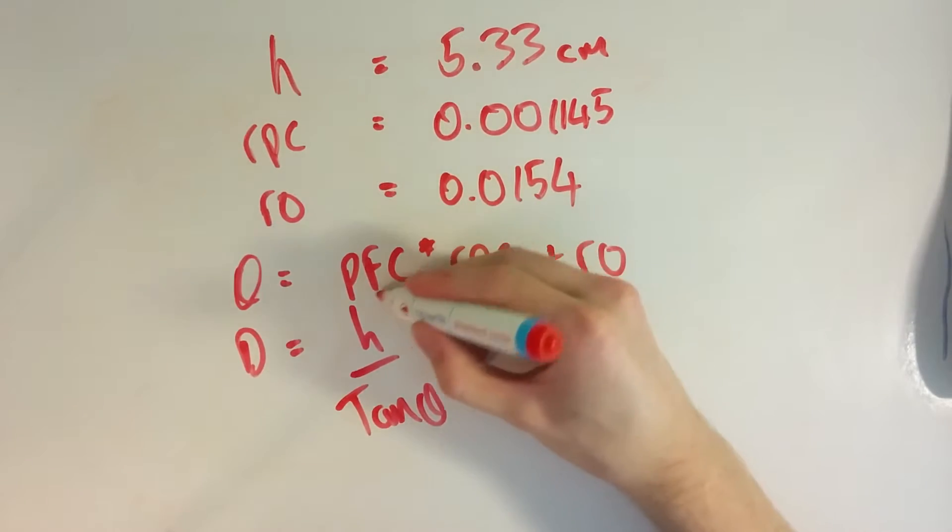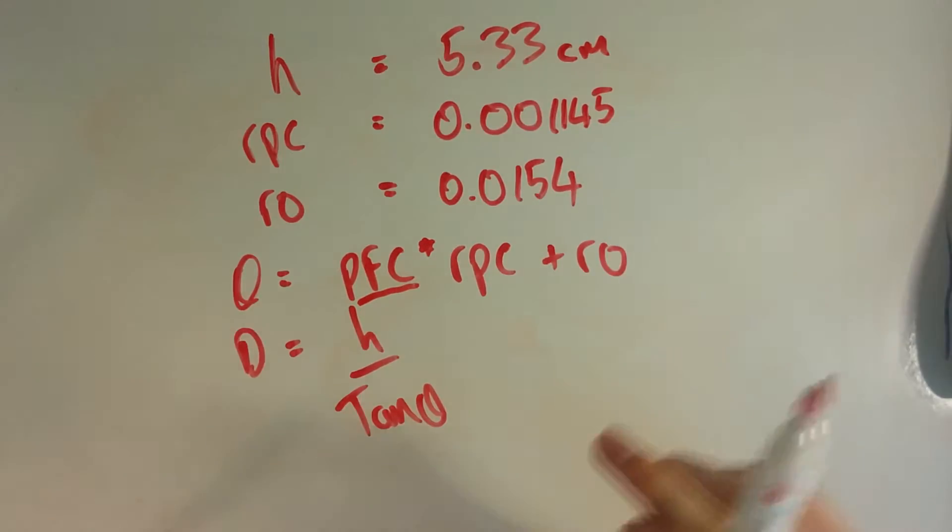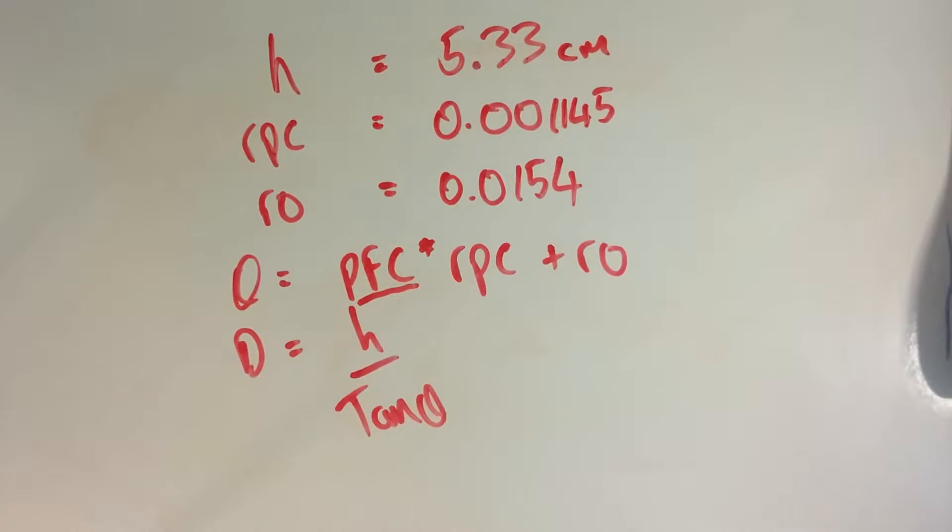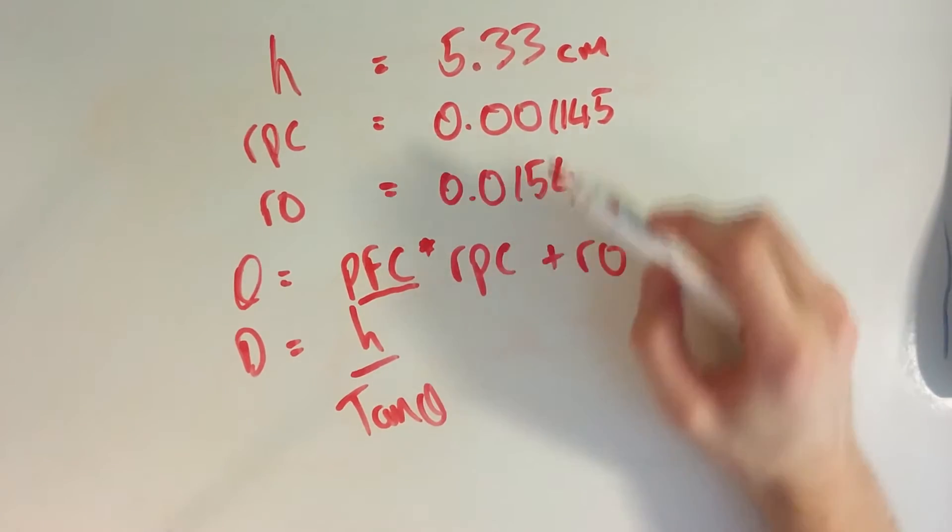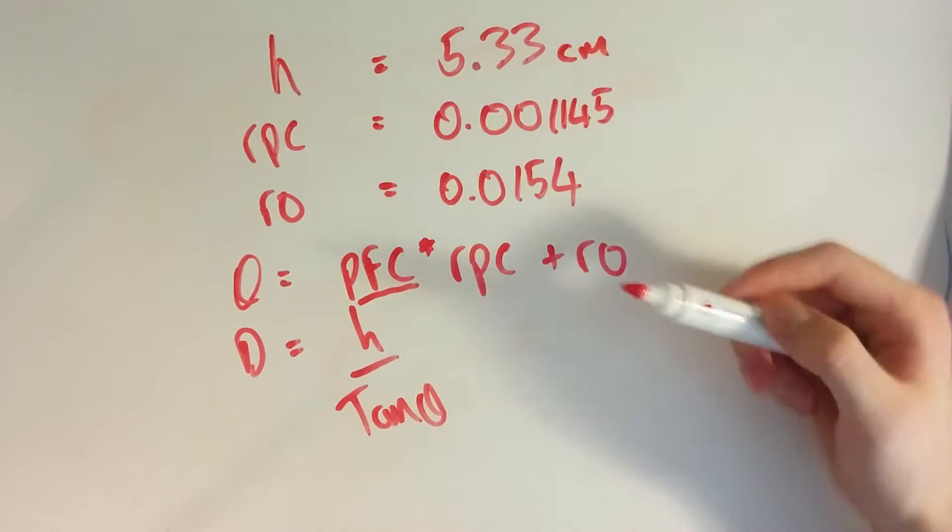This value right here we get from our computer program. Your Python script or whatever takes an image from the webcam, it finds the red dot and it says how many pixels away is the red dot from the center - might be like 100 pixels, 200 pixels, something like that. rpc is just a constant we have here, r0 is another constant we have here.